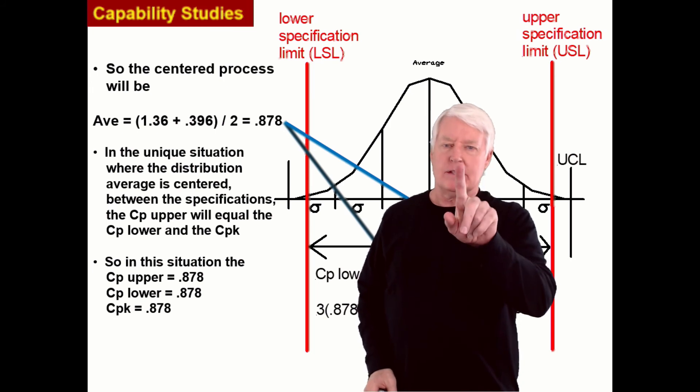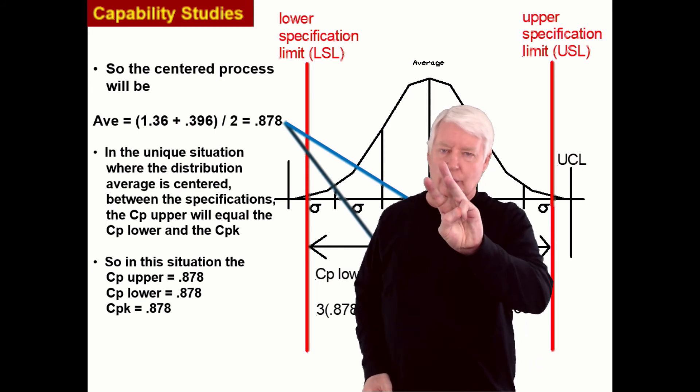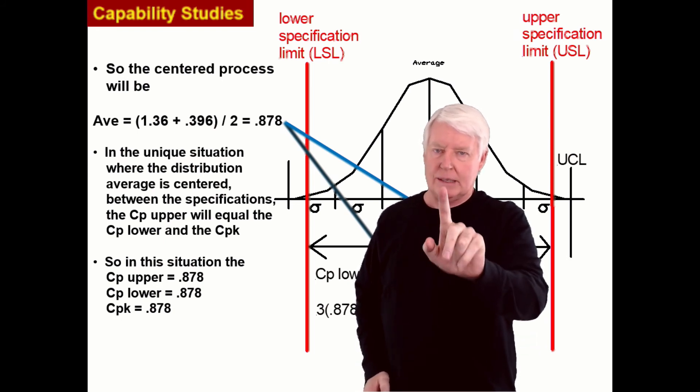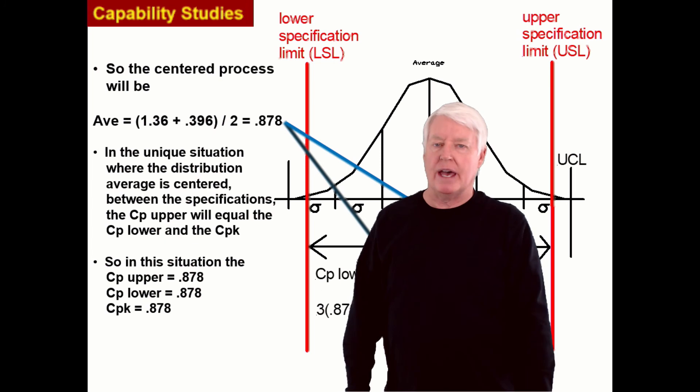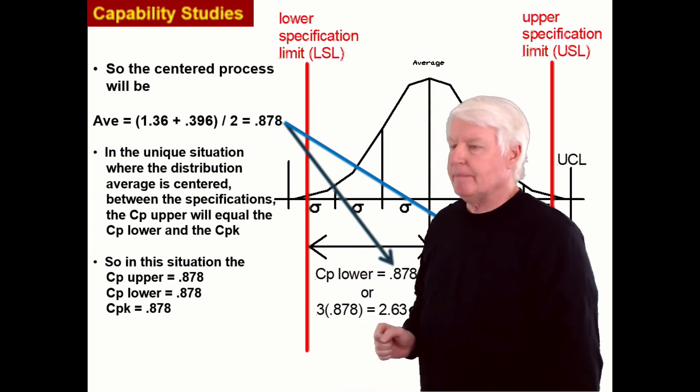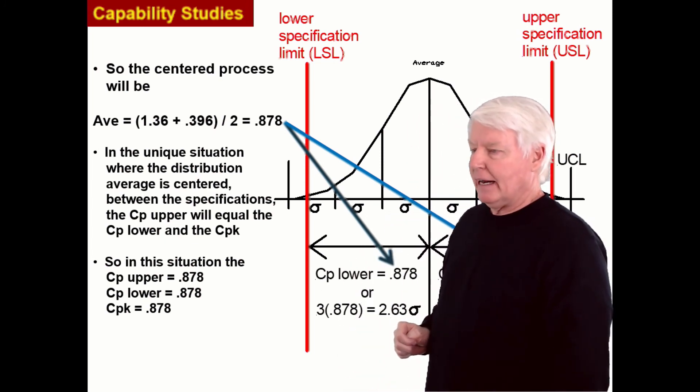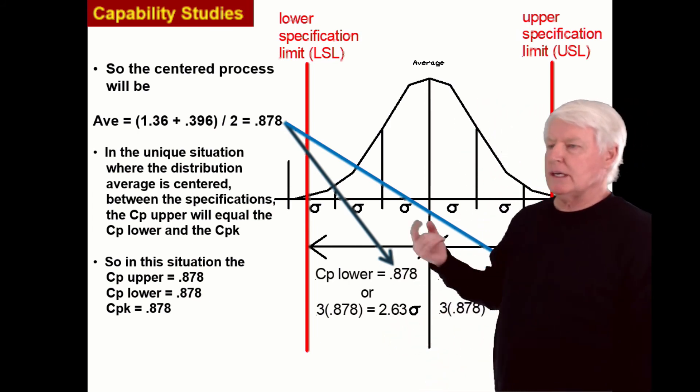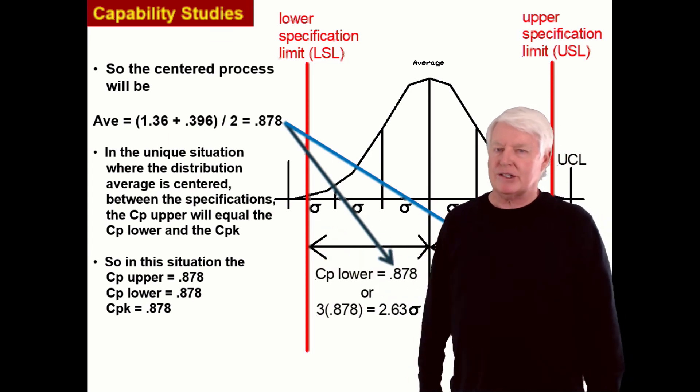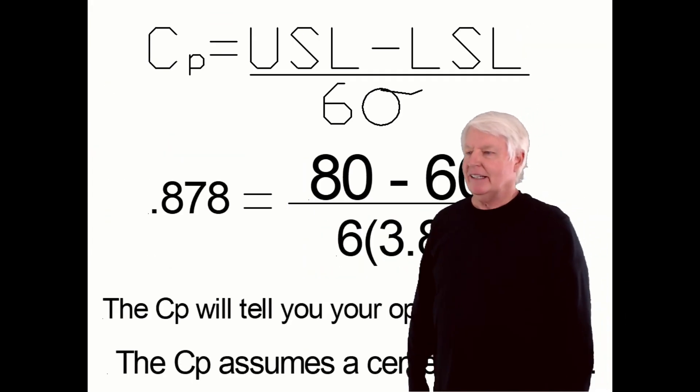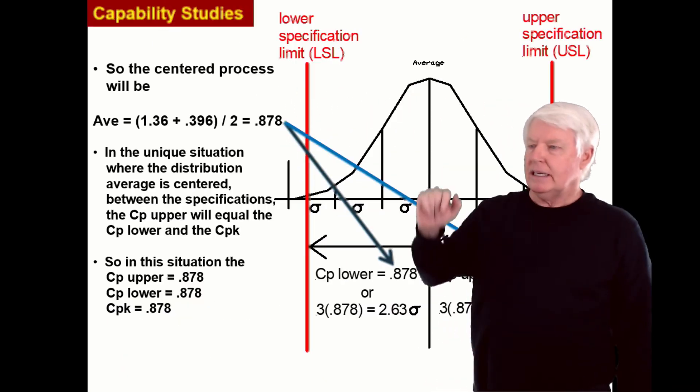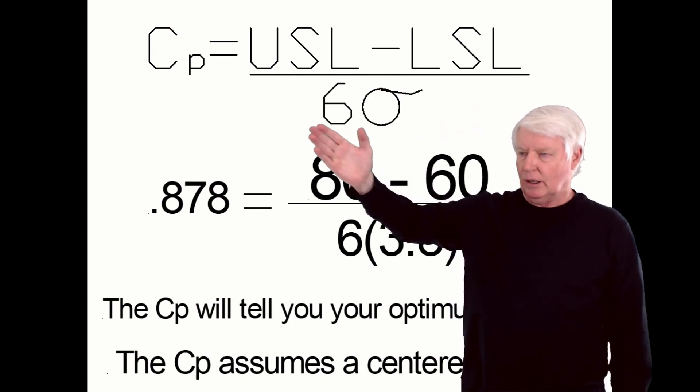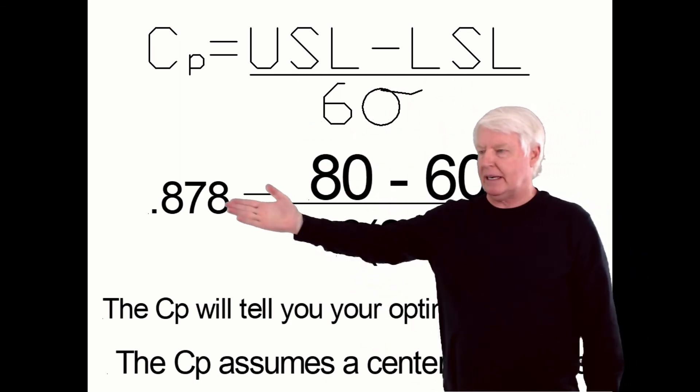So now what have we covered? CP upper, CP lower, CPK, the weakest link. CP, the average of CP upper and CP lower, which tells you what CPK would be if the process was centered, which is usually optimal for many manufacturing type processes. So that's it. We went over all those: CP upper, CP lower, CPK, CP. Hopefully you understand that. And this is the formula, by the way, for CP. You can either take the average of CP upper and CP lower, or you can go upper spec limit minus lower spec limit divided by 6 sigma gives you the same answer.